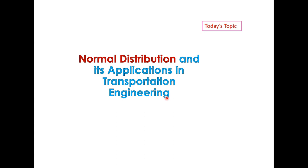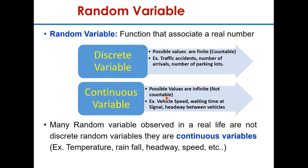To model a continuous random variable, it has a number of useful applications in traffic engineering. A random variable is a variable whose value is unknown, or it is a function that assigns values to each of an experiment's outcomes. This random variable can be either discrete or continuous. A discrete variable will have possible values that are finite, that is countable — for example, traffic accidents, number of arrivals, number of parking loads, etc.